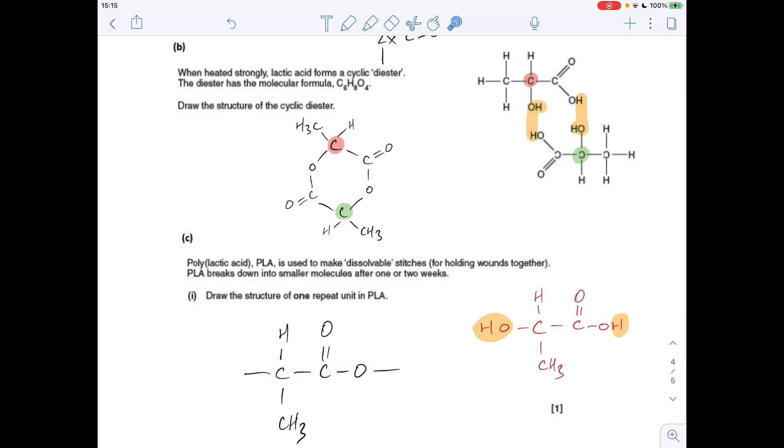Like before, I could have just taken the H off there, which would have meant I would have had an O there. And I would have needed to therefore take the OH group off here. So I would have just had that bond end in there rather than going to the O.